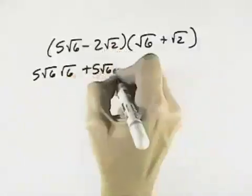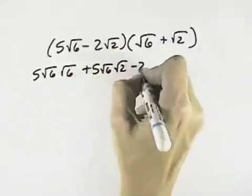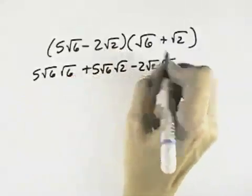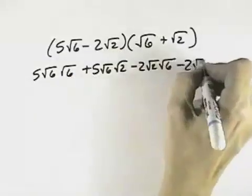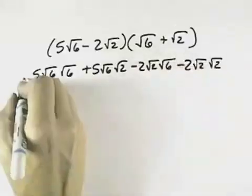plus 5 square root of 6 times the square root of 2 for the outer terms, minus 2 root 2 times the square root of 6 for the inner terms, and minus 2 root 2 times the square root of 2 for the last terms.